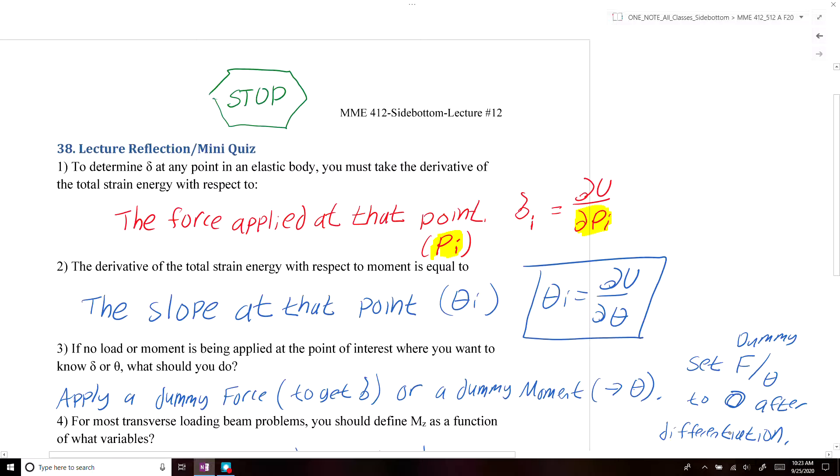Alright, so hopefully you completed the questions and now you're ready to go over the answers. To determine the deflection at any point in the elastic body, you must take the derivative of the total strain with respect to the applied force of that point. The applied force at that point we usually denote with the letter PI. The I stands for the location of where that force is being applied, and that should be at the same location where you're trying to find the displacement. It also should be in the same direction.